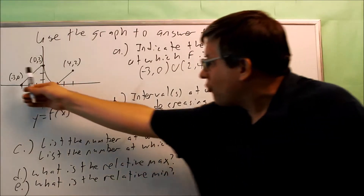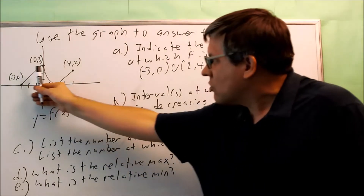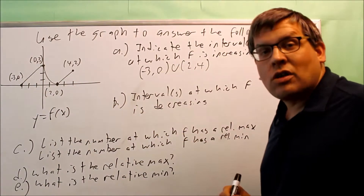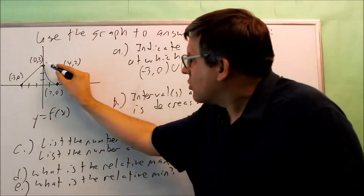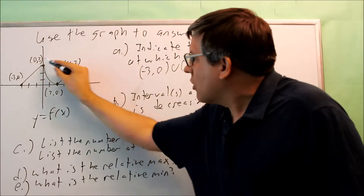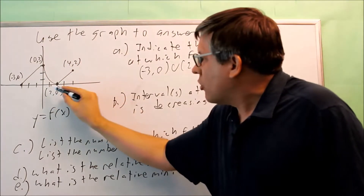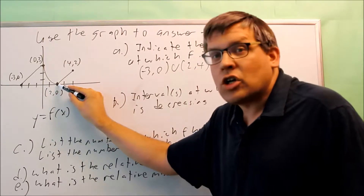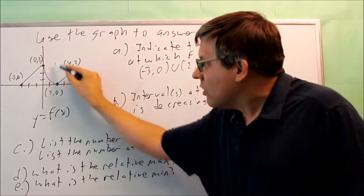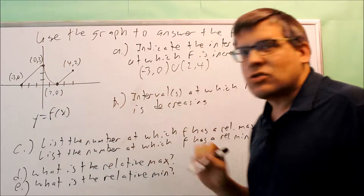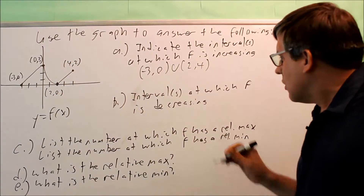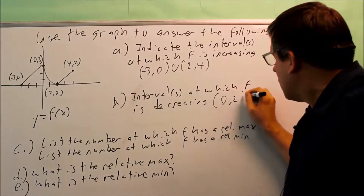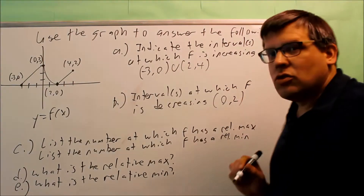Decreasing means as you move from left to right, you're looking for the part of the graph that's going downhill. There's a section of the graph right here that's going downhill, between the x value of 0 and the x value of 2. That's where the graph is decreasing, so this only has one answer: from 0 to 2.